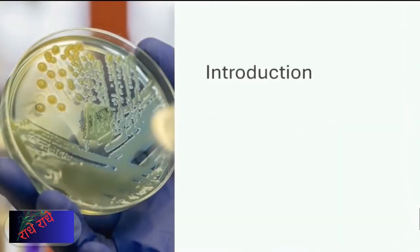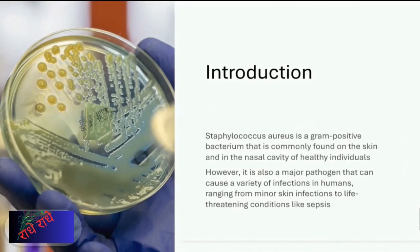Staphylococcus aureus is one of the most common and dangerous bacteria found in humans. Usually found on the skin and in the nasal cavity of healthy individuals, this bacterium can cause a range of illnesses, ranging from mild to severe, even resulting in death if not treated properly. It is important to be aware of the risks associated with Staphylococcus aureus.